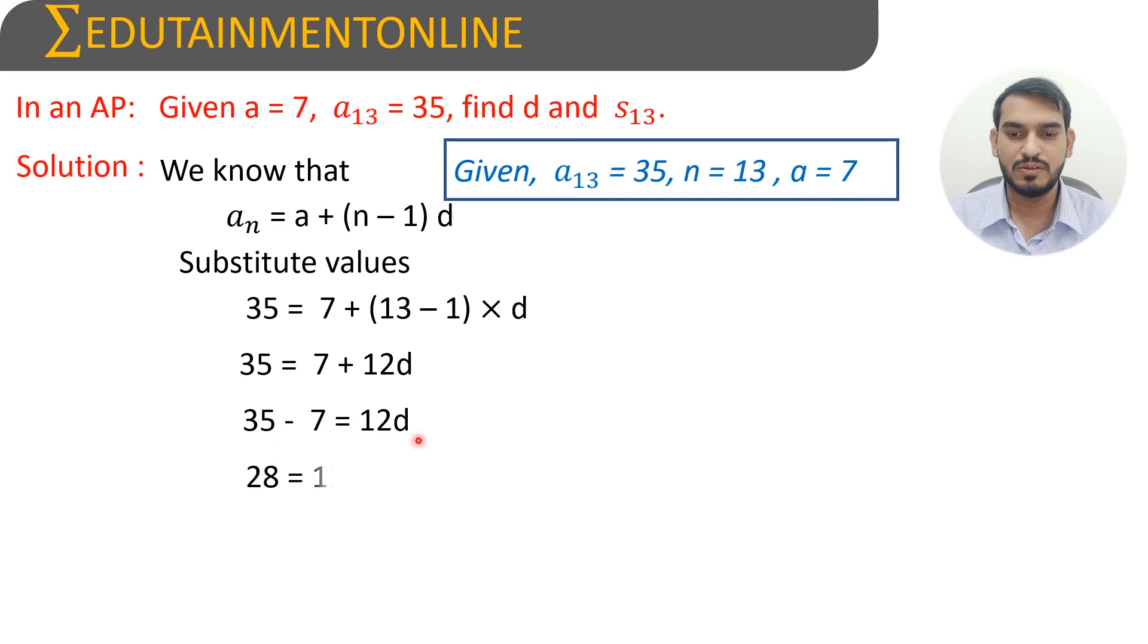35 minus 7 equals 12d. 28 = 12d. Now 28 divided by 12 equals d. We can cancel to get d = 7/3. Now we have d and can find s₁₃.